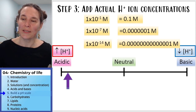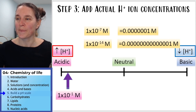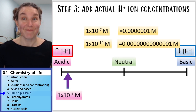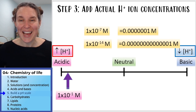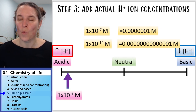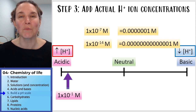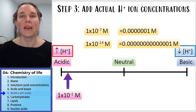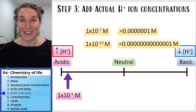1×10⁻¹ is a one-tenth molar solution, and that's more hydrogen ions than any of the other ones, which is why it goes on the acidic side.